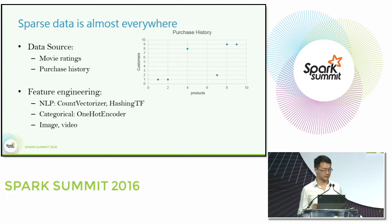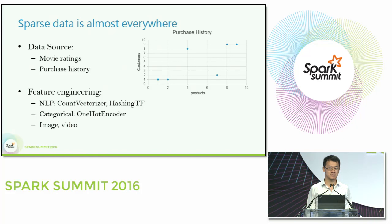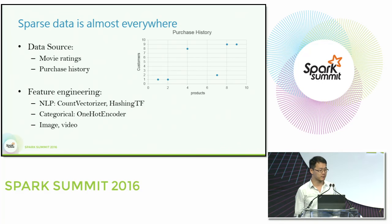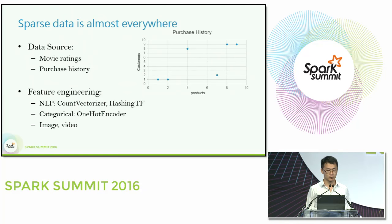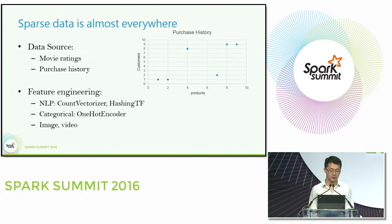Sparse data is almost everywhere in the big data field, especially for large-scale machine learning applications. Two typical examples are movie ratings and purchase histories. Typical users from a movie ratings website will only provide comments or feedback for fewer than 10 items, and customers from an e-commerce website will typically have only bought dozens of items even if the website provides millions of different choices. If we join a big table containing purchase history with each row representing the products a customer has purchased, we'll find that the table is pretty much empty because of significant data sparsity.